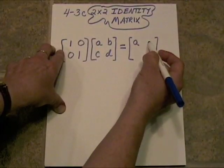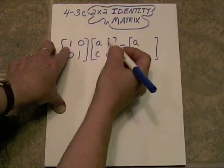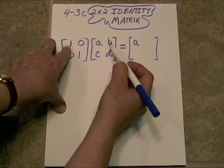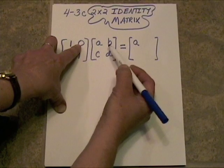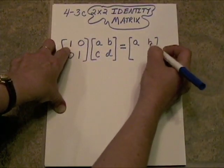Alright, let's see what will go in this spot. We'll take this row times this column. 1 times B is B. 0 times D is 0. B plus 0 is B.